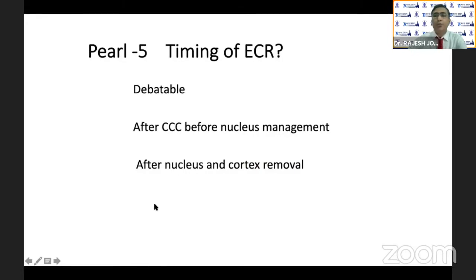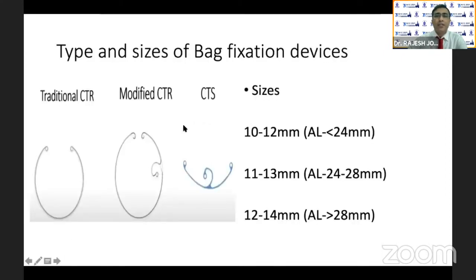The timing of placement of the endocapsular ring is debatable. You can place it after the CCC, that is before nucleus management, or after nucleus and cortical removal. Various types and sizes of fixation devices are available: traditional capsular tension ring, modified CTR with an eyelet, and capsular tension segment. Most commonly used size is 11 to 13 mm, since most patients have axial length between 23 to 28 mm. For a large bag, you can use a larger endocapsular ring.